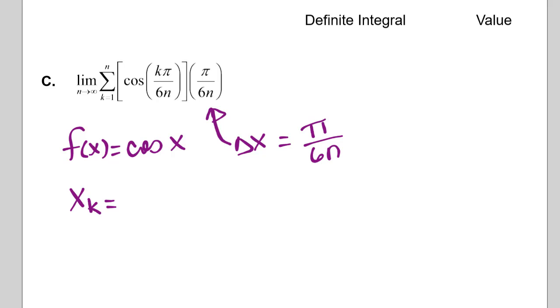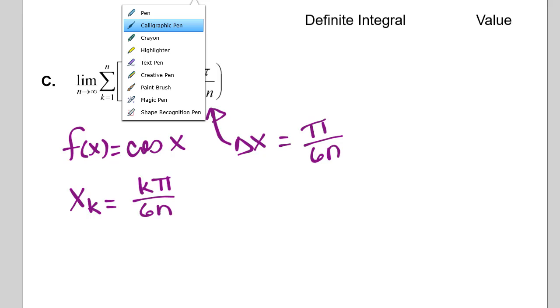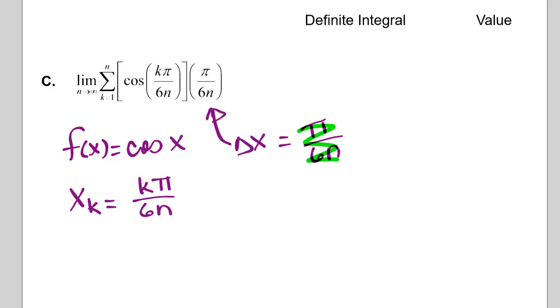And we've got x of k is equal to 6 pi, I'm sorry, k pi over 6n. Okay. So I can see my delta x in there, right? We said that delta x was pi over 6n, and here's pi over 6n. So we've got delta x times k.